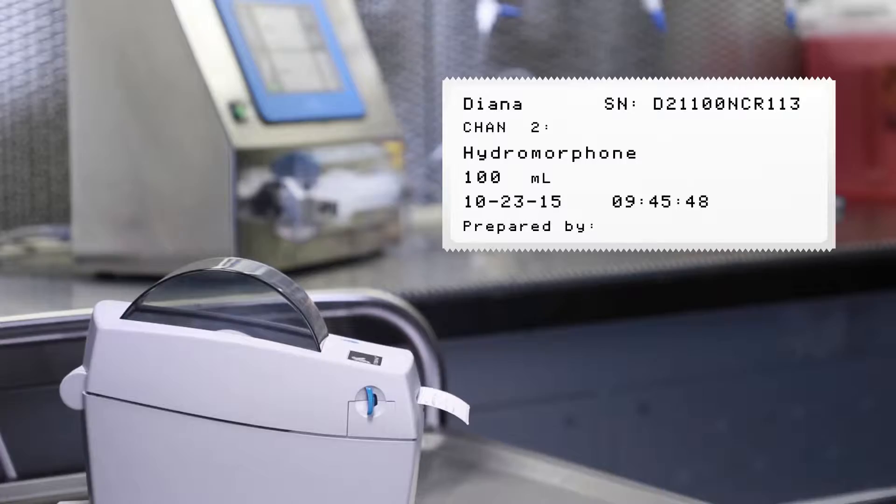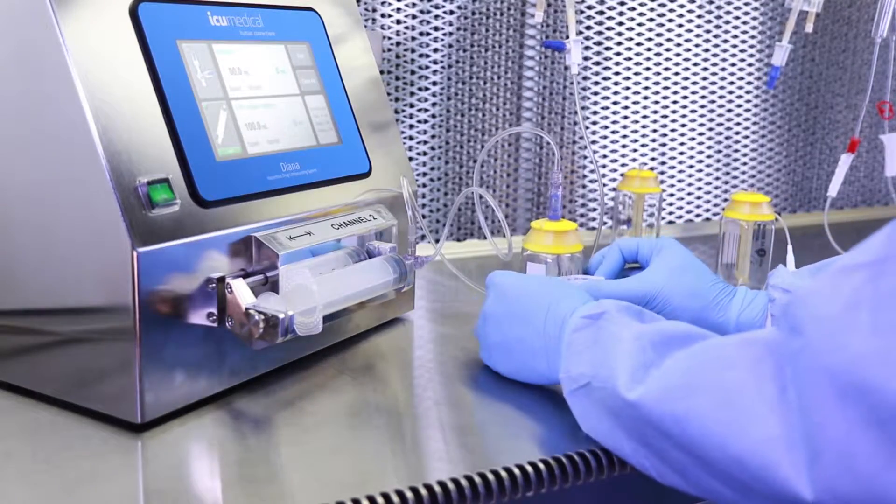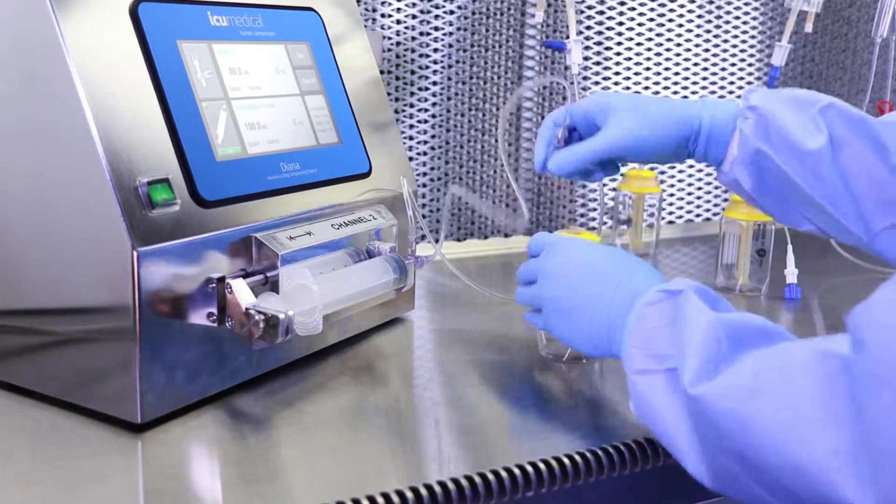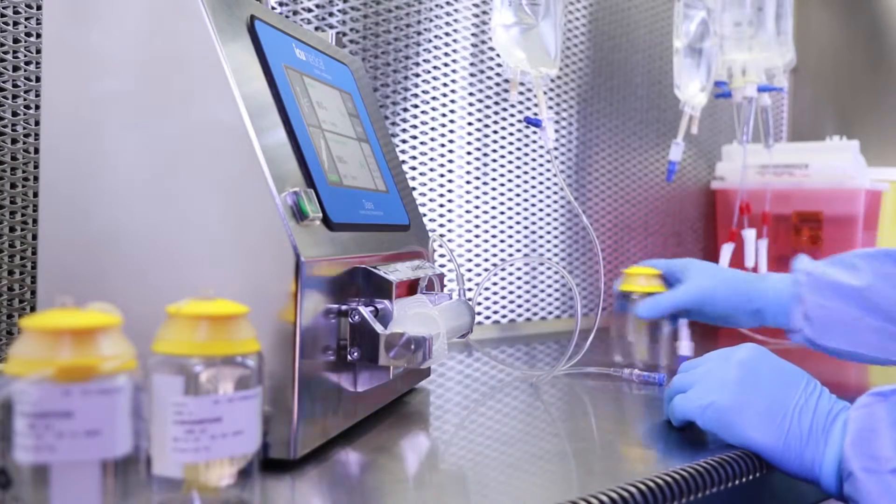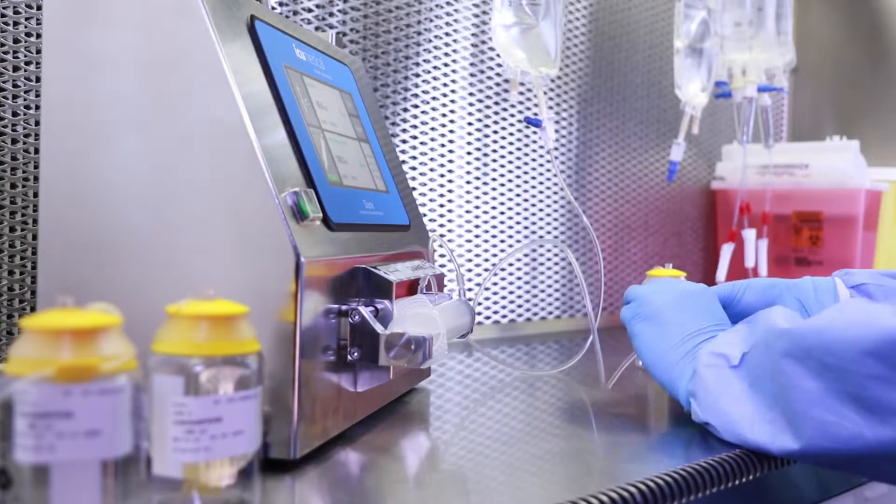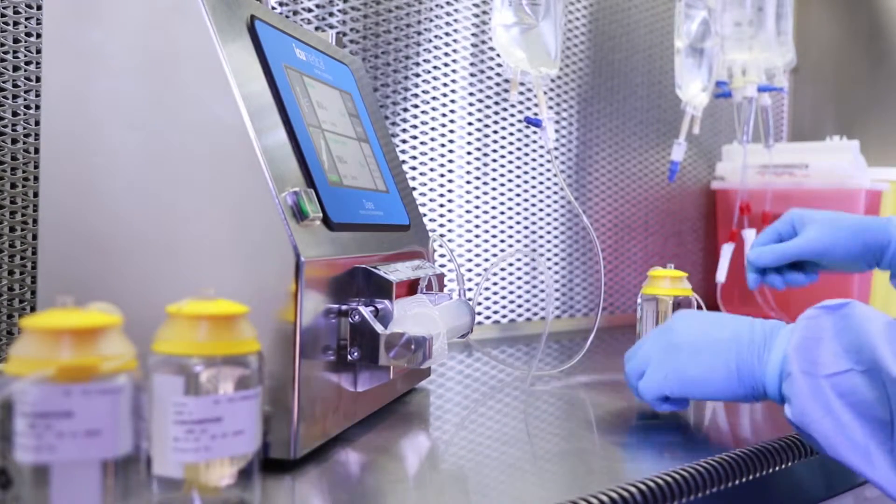When a mix is complete, Diana prints up to five labels to help you verify and keep a complete record of each preparation. When you're done, replace the pump and repeat the process as many times as needed.